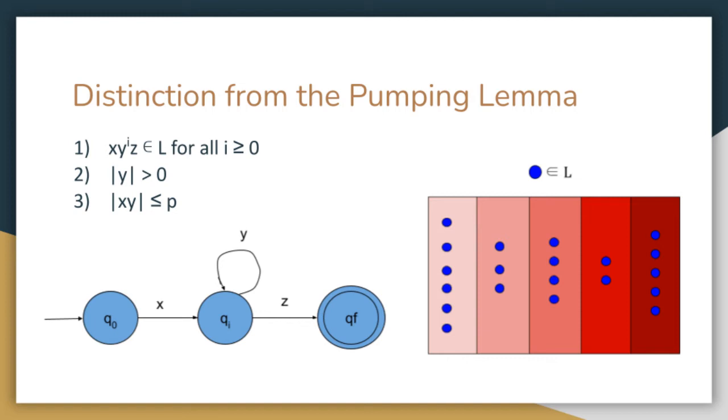Figure 1 gives a visual representation of the pumping lemma, where any number of additional states may exist between each of the three states, n-state qi and itself. The purpose of figure 1 is to show that in order to prove that a language is non-regular using the pumping lemma, a specific string in the language must be chosen such that it remains in the language when pumped according to y for every possible way that it can be split into x, y, and z.